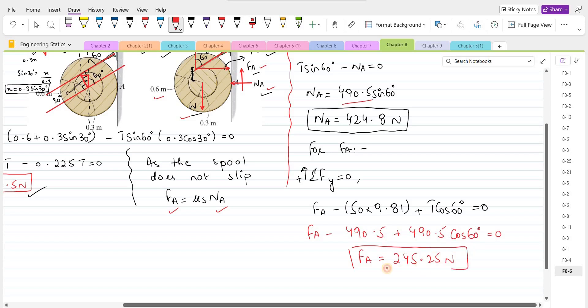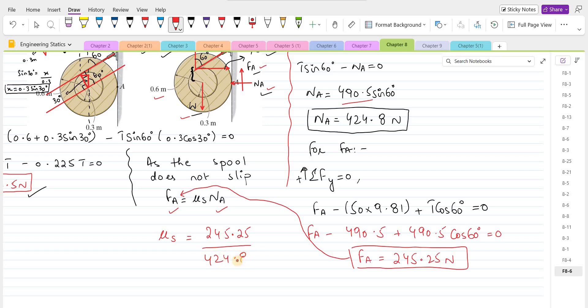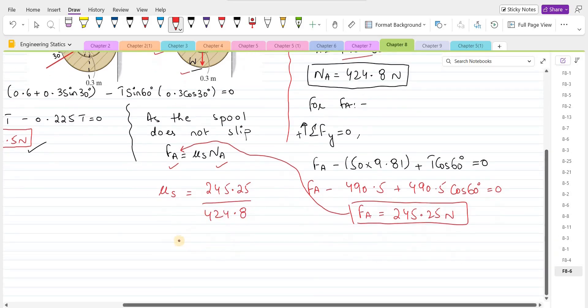And we can substitute it into this equation. So the coefficient of static friction is FA over NA. So 245.25 over 424.8. So coefficient of static friction comes out to be 0.577. So this is our final answer.